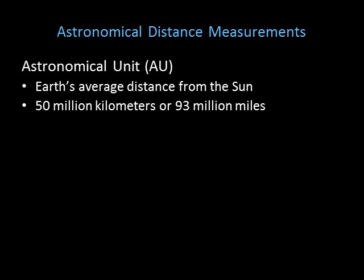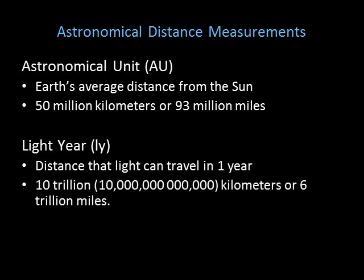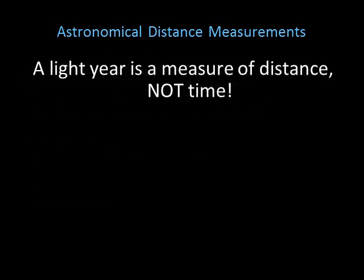For larger scales, we generally use the light year. A light year is the distance that light can travel in one year. Light is pretty fast, so it can cover a lot of space in a year — a light year amounts to 10 trillion kilometers, or about 6 trillion miles. It's important to remember that a light year is a measure of distance, not time.